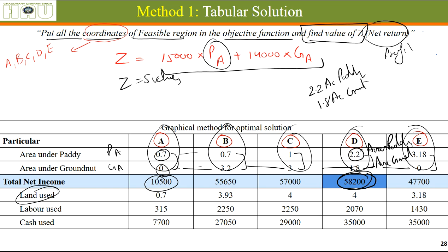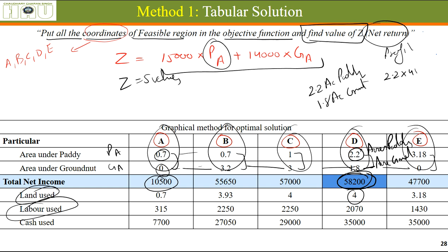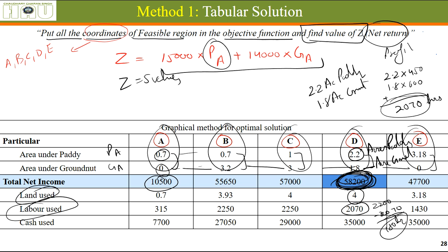At the optimal combination D, we used all 4 acres of land. For labor: 2.2 × 450 + 1.8 × 600 = 990 + 1,080 = 2,070 hours of labor used, leaving some labor remaining unused. Still, we earned the maximum amount of money. This cash amount was used in this combination. The optimal solution is one of the feasible solutions.